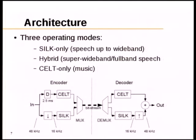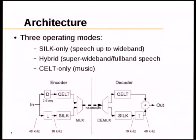The Opus codec architecture has two main components: SILK and CELT. On the encoder side, a SILK encoder works in parallel with a CELT encoder, both outputting to the same bitstream, with two parallel decoders. There are three modes of operation: for speech from narrowband to wideband, only the SILK part is used; for music, only CELT. In a hybrid mode, both SILK and CELT are used simultaneously for very high quality speech — SILK efficiently codes up to 8 kHz, and CELT picks up the remaining frequencies up to 20 kHz, giving very high quality speech at 32 kbps full band.